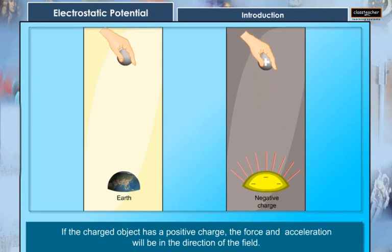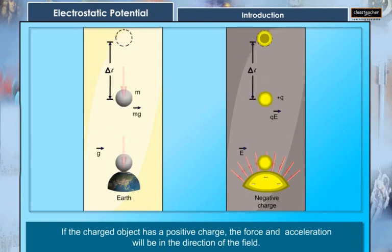If the charged object has a positive charge, the force and acceleration will be in the direction of the field.